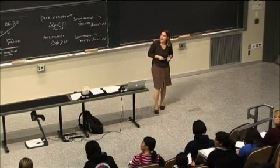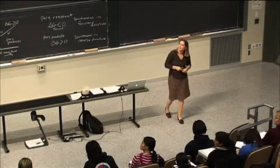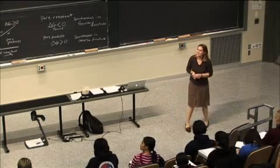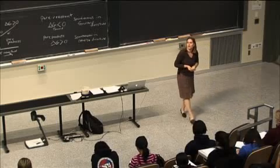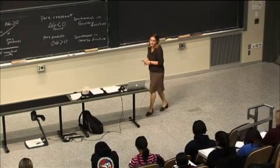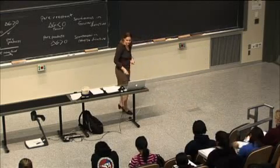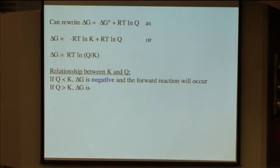So let's think about that relationship for a minute. If Q is less than K, what is the sign of ΔG? It will be negative, which means the forward direction of the reaction will occur.